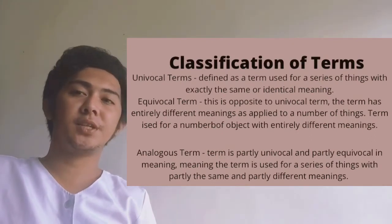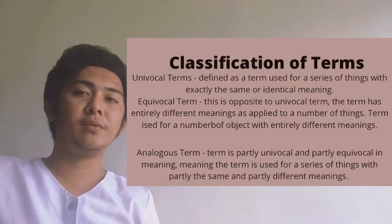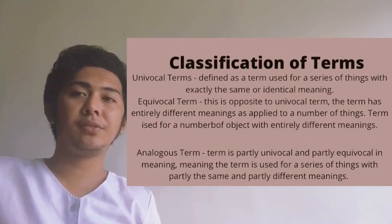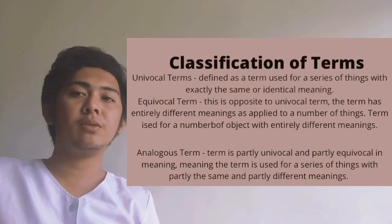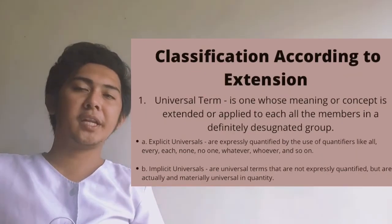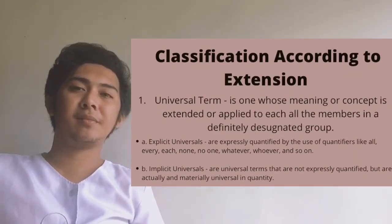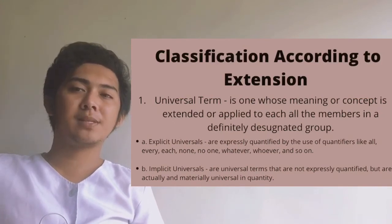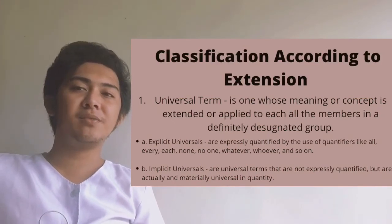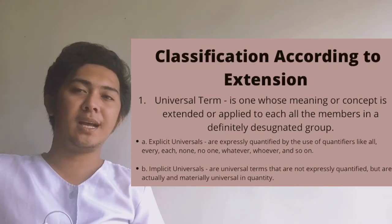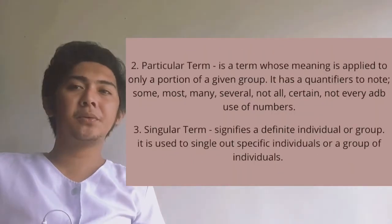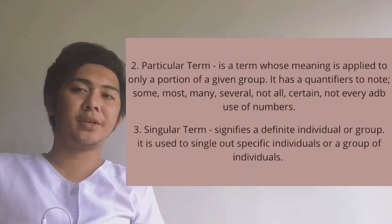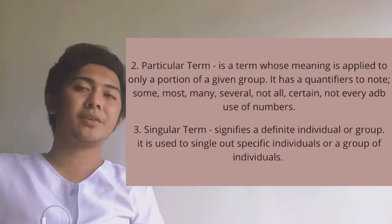For the classification of terms, we have univocal terms, equivocal terms, and analogous terms. For classification according to extension: first, we have the universal term, which has two types — explicit universals and implicit universals. Second, we have the particular term. Third, we have the singular term.